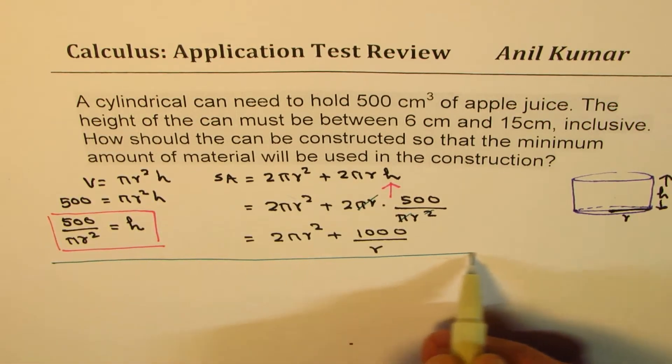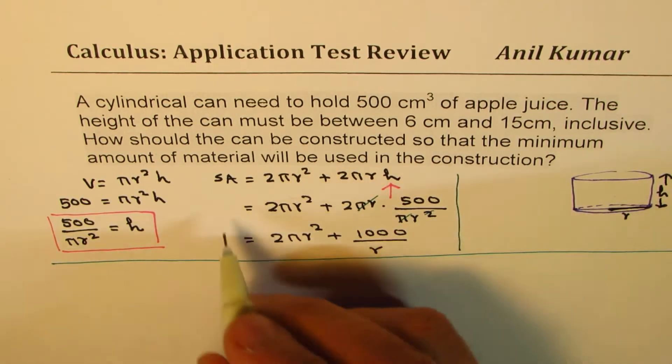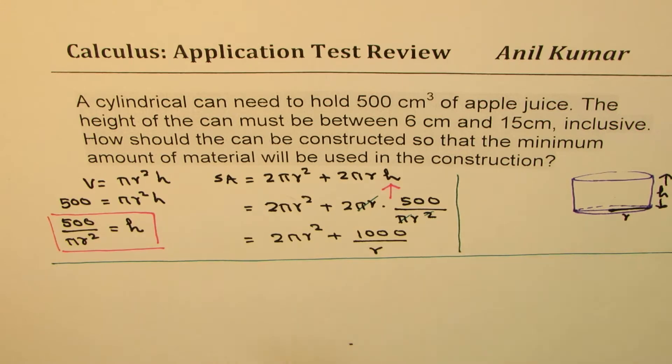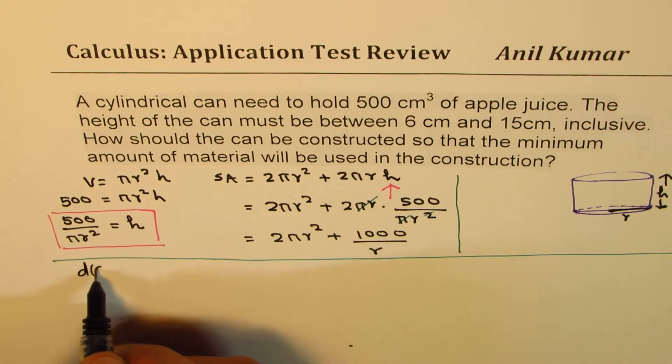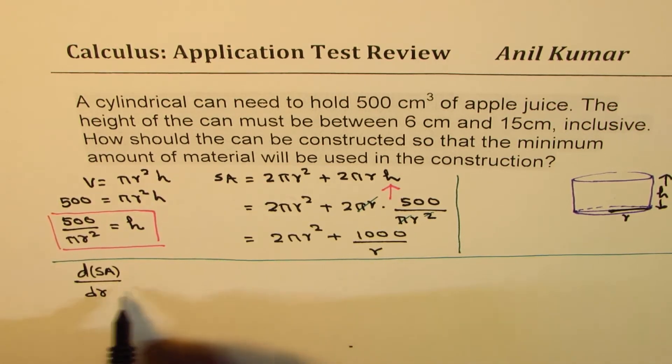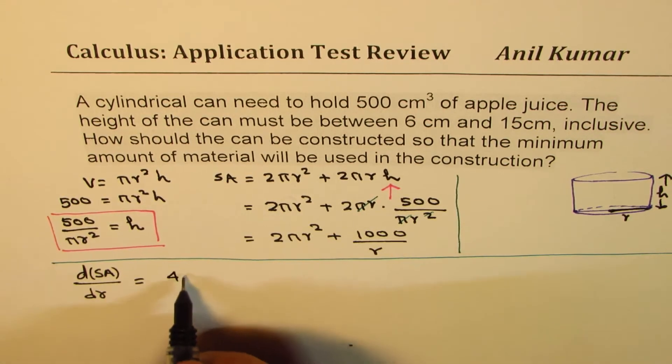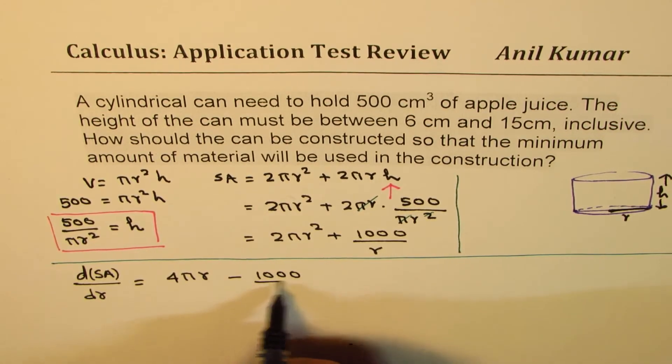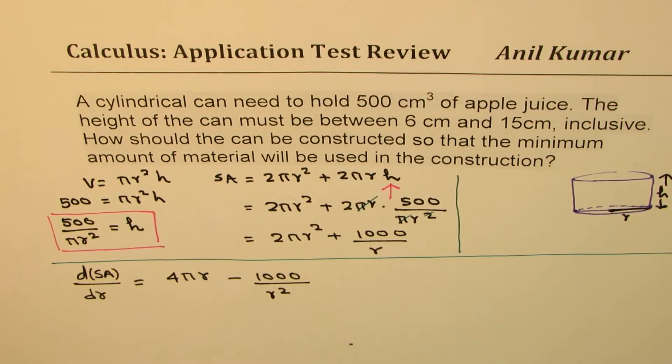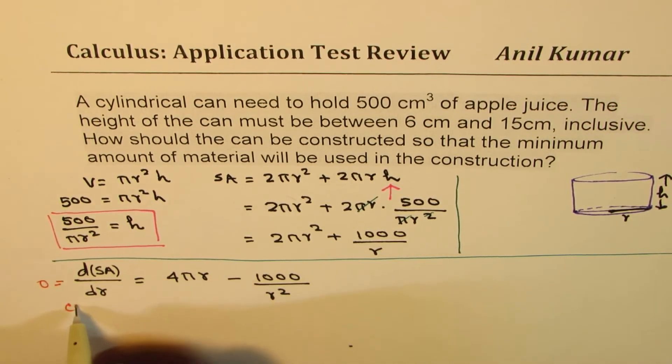Differentiate it whenever you have maximum minimum. The idea here is to find the first derivative and analyze the first derivative. So we can differentiate with respect to r. So dS/dr is 4πr and here we get minus 1000 over r². To find the critical number, we'll equate this to 0.